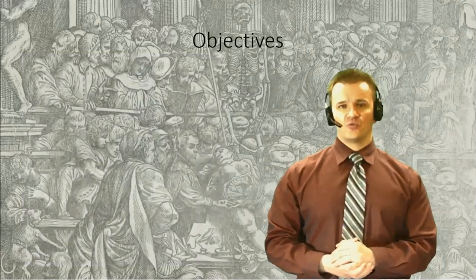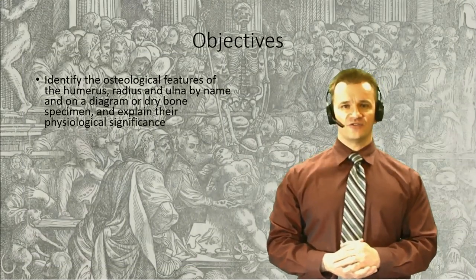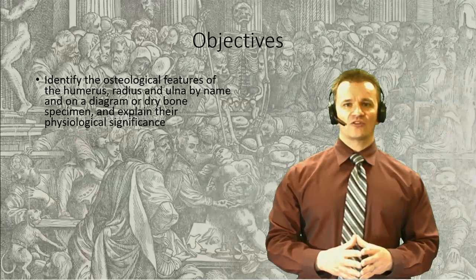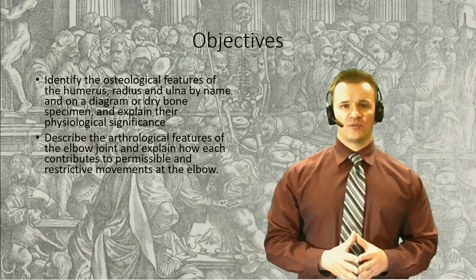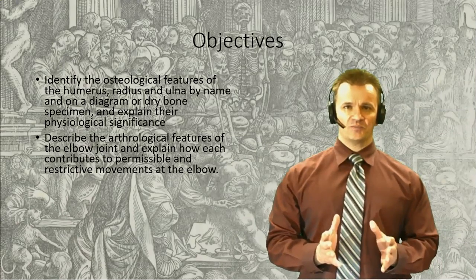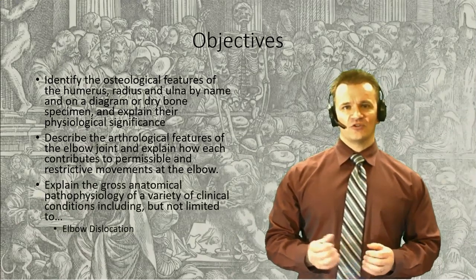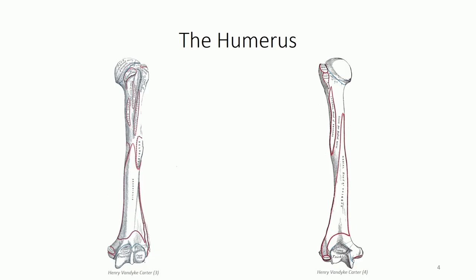Our objectives for this session will be to continue with our discussion of the humerus by looking at the distal features of this bone, as well as the proximal features of the radius and ulna. We'll then look at how these bones come together to form the elbow joint and consider the biomechanics of movement. We'll also look at some clinical conditions related to the elbow. To begin our discussion, we first return to the humerus, continuing from the shoulder lesson when we looked at the proximal portions of the bone.